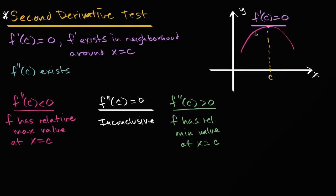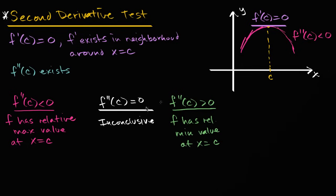The other thing we can see is that we are concave downward in the neighborhood around x equals c. Notice our slope is constantly decreasing — it's positive, then less positive, even less positive, goes to zero, then becomes negative, more negative, and even more negative. So we know that f double prime of c is less than zero.